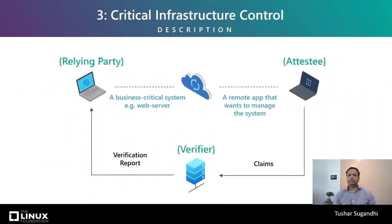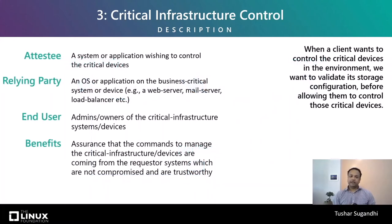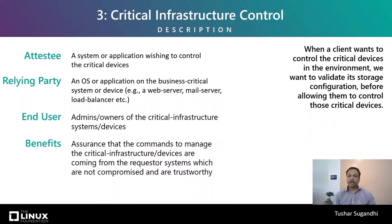The last example scenario is critical infrastructure control. Here we have some sensitive infrastructure like a mail server or web server as a relying party, and the attestee is a system used to remotely manage the critical infrastructure. The end users would want to ensure that if a client wants to control the critical devices in the environment, those clients themselves meet a certain security bar — to ensure that clients sending commands to manage critical devices are not compromised and are trustworthy.